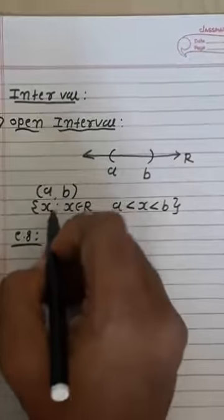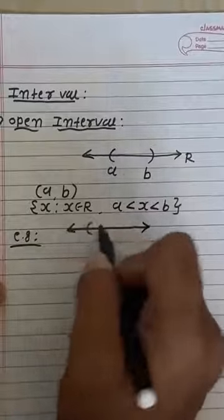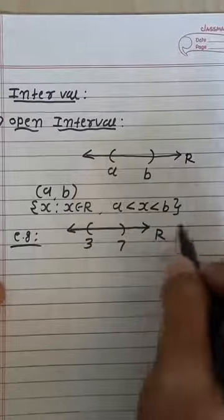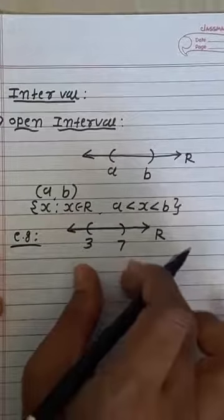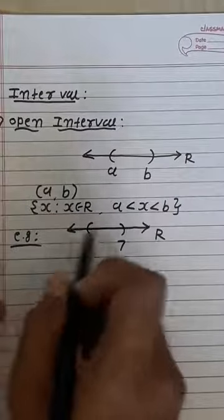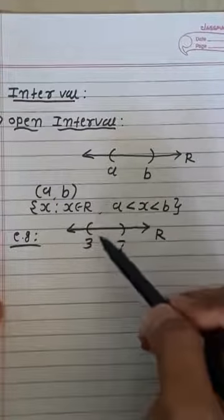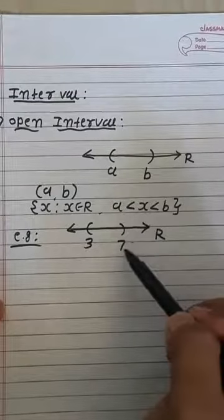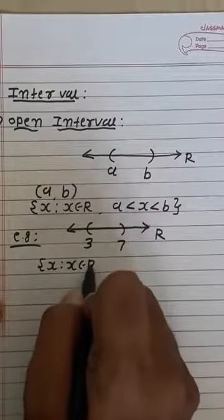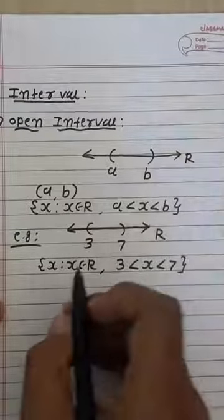Let us take one example. Suppose 3 and 7 are present on the number line. Here open interval (3, 7) is present. In set builder form, using A = 3 and B = 7, we write: {X | X belongs to R, 3 < X < 7}.